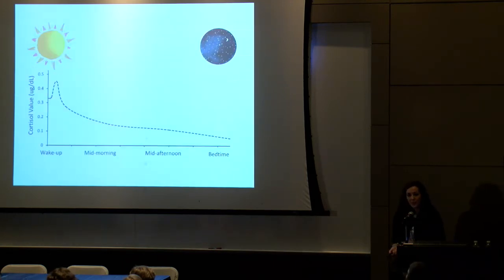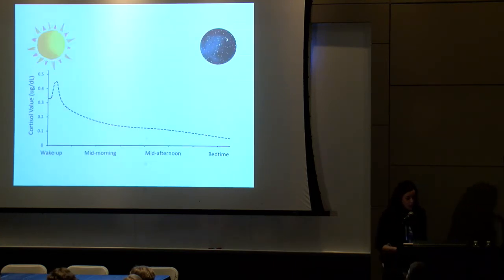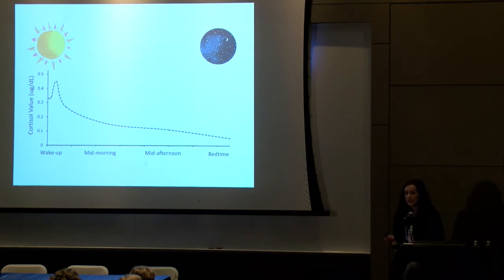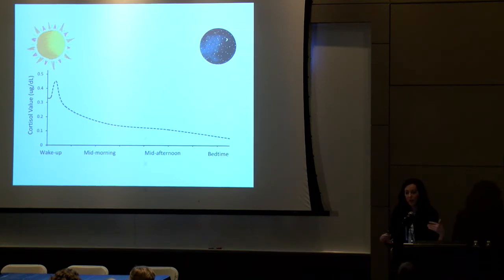This is what that rhythm looks like. When we wake up in the morning, we have a peak of cortisol about 30 minutes after we wake up. It's highest in the morning, and that helps us mobilize energy and start our day. That peak of cortisol is indicative of getting up and starting our day rather than increased stress in the morning.